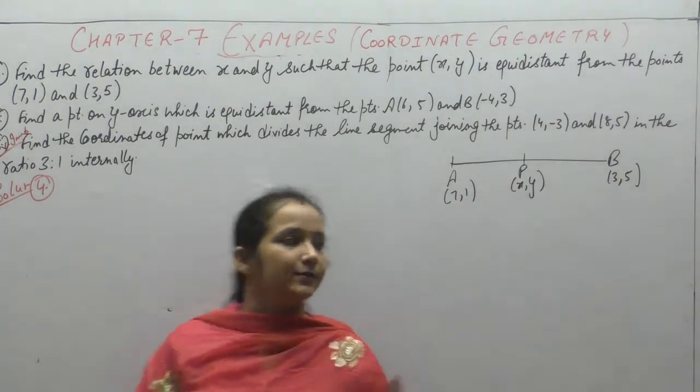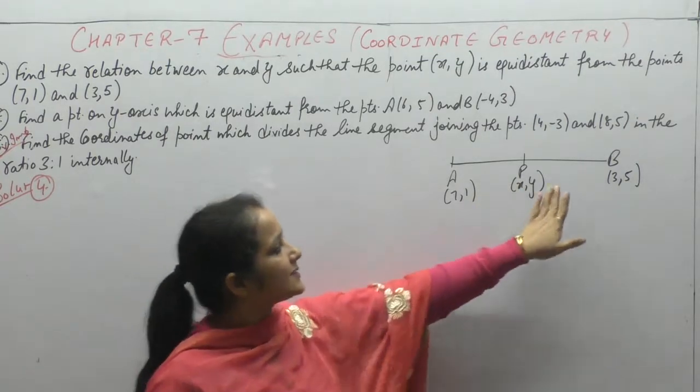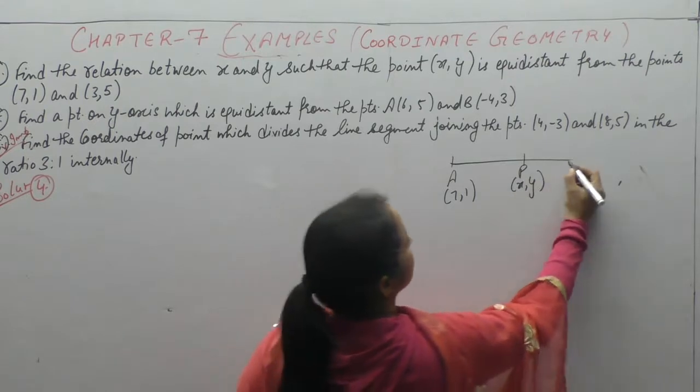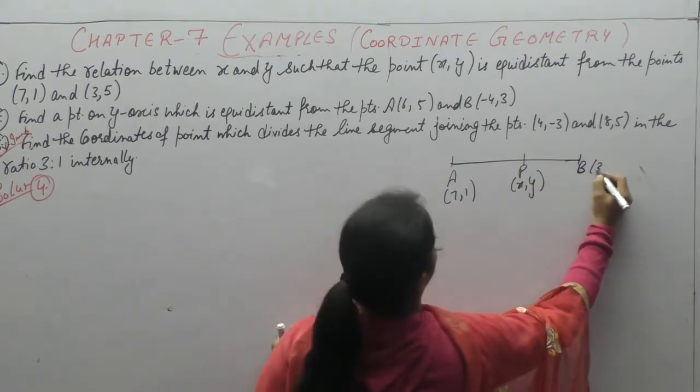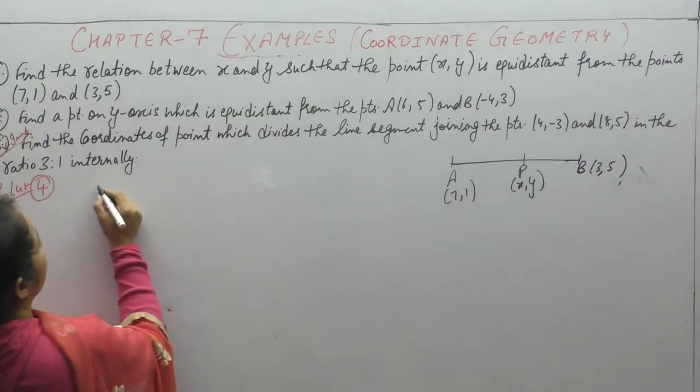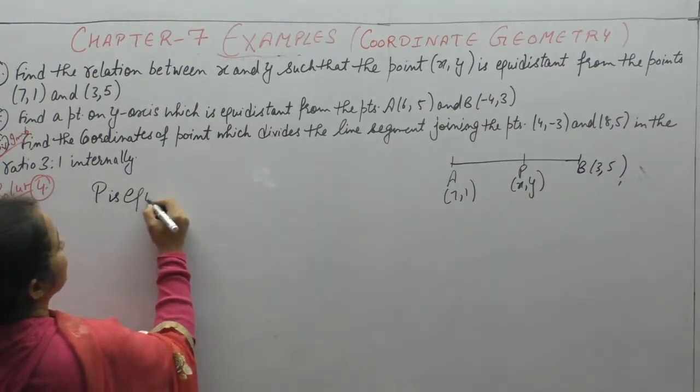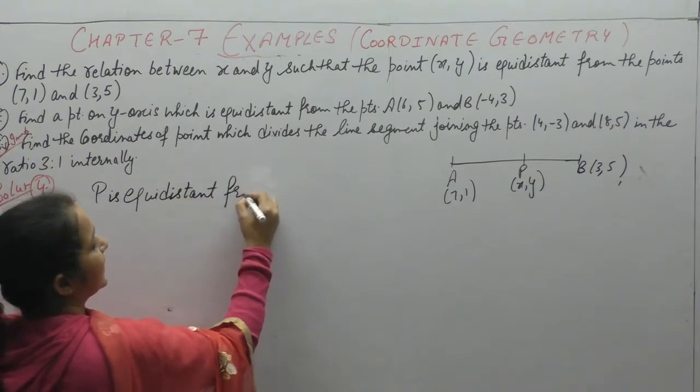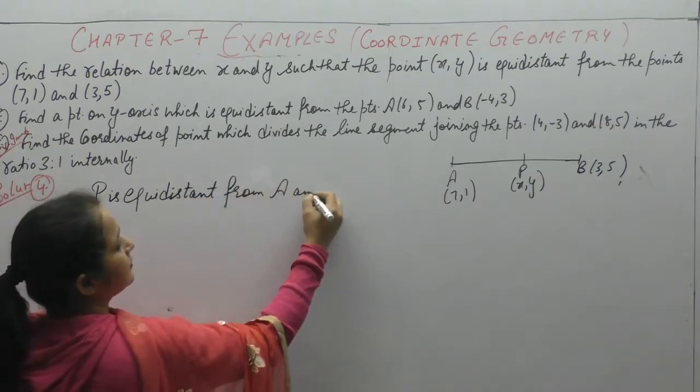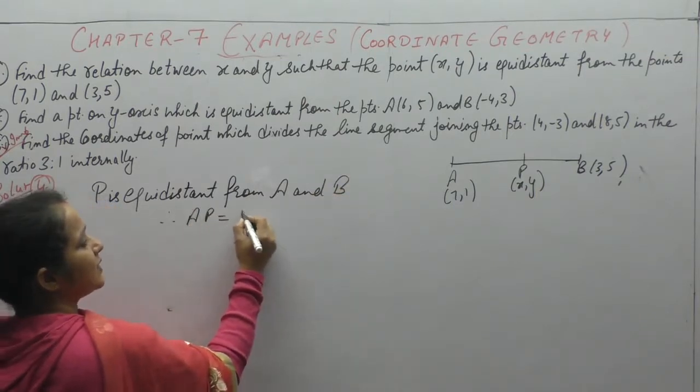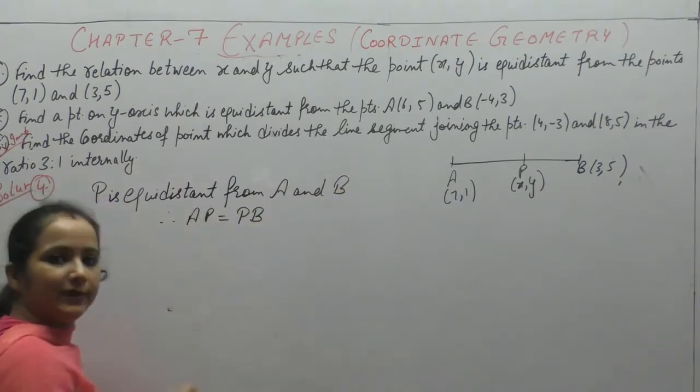Equidistant means point P's distance from A is equal to its distance from B. Both points have equal distance. P is equidistant from A and B, therefore AP equals PB.